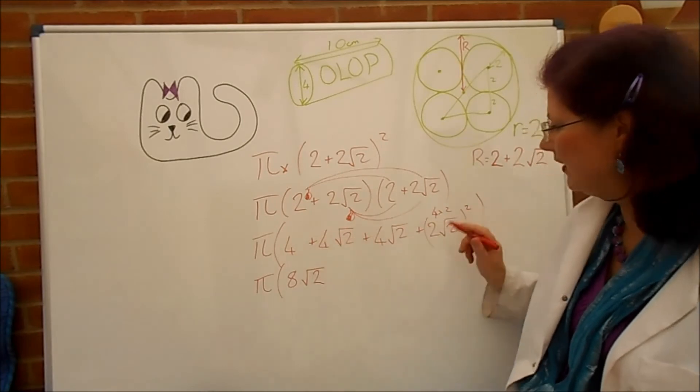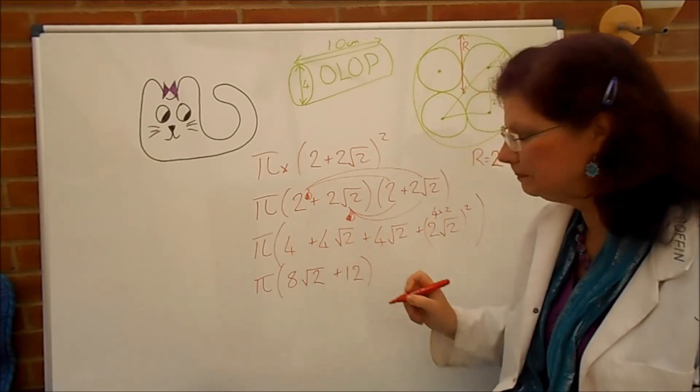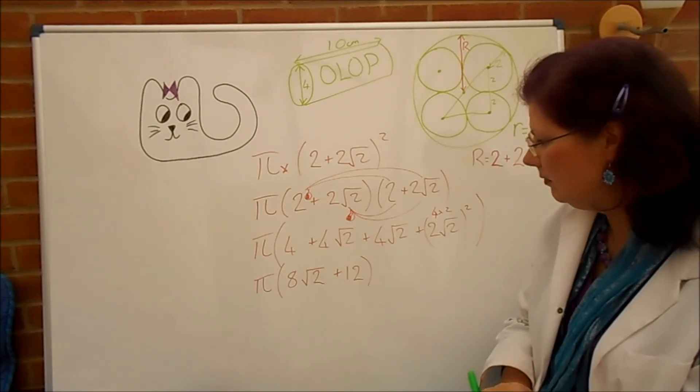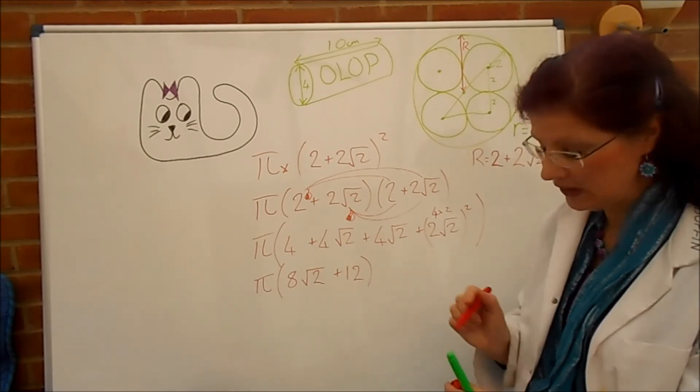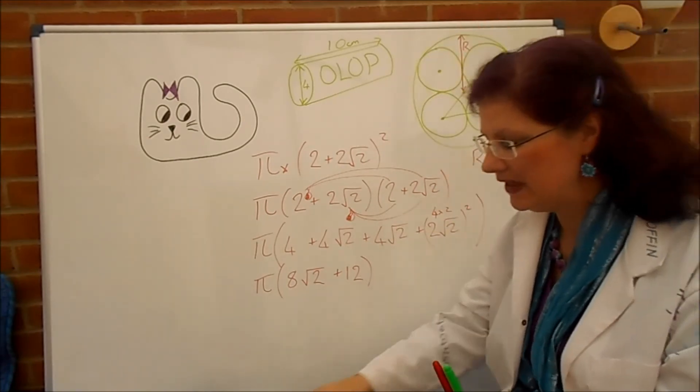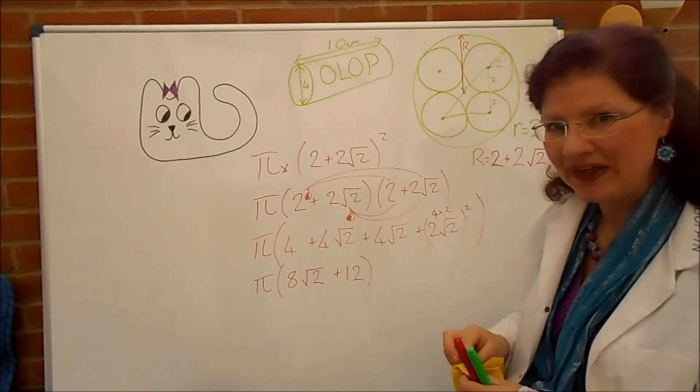So, we've got a four plus an eight. That's plus a twelve. Okay, can we simplify that? No, I think that's about as good as that one gets. So, that is the area of the big circle. Okay, I'm going to wipe down the board and put that and then we're going to work out the little ones as well.